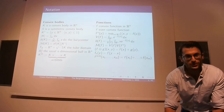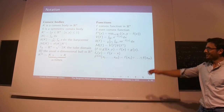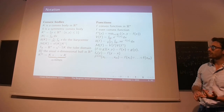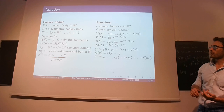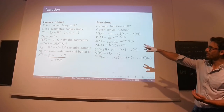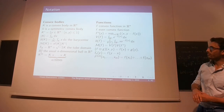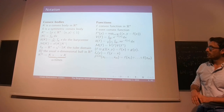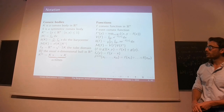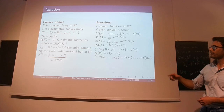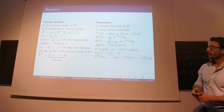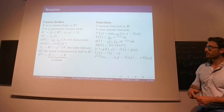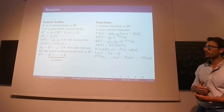I want to fix some notation before I begin. K is going to denote the convex body. S is going to be used to denote the symmetric convex body. K-circ is the polar. Absolute value of K will denote the volume. Pk is the power center. Mk is the Mahler volume. Tk is the tube domain, like R^n Cartesian product of K. B2n is the usual n-dimensional ball in R^n. And K superscript N is like a Cartesian product of K itself.